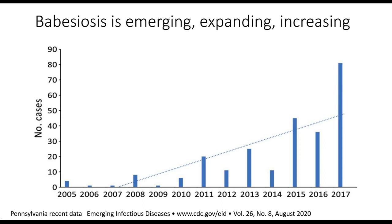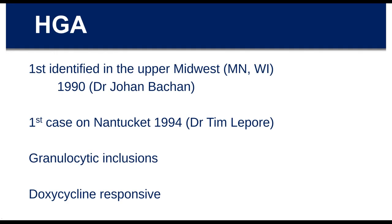Babesia is an emerging and expanding infection — this Pennsylvania graph, and most states in the Northeast and upper Midwest, show graphs like this. Let's talk about HGA, human granulocytic anaplasmosis. It was first identified in the upper Midwest by Dr. Johan Bakken, former president of the IDSA. The first case in the Northeast was on Nantucket by a colleague, Dr. Lepre. The 'G' in granulocytic refers to where it lives; it is doxycycline responsive, unlike Babesia.